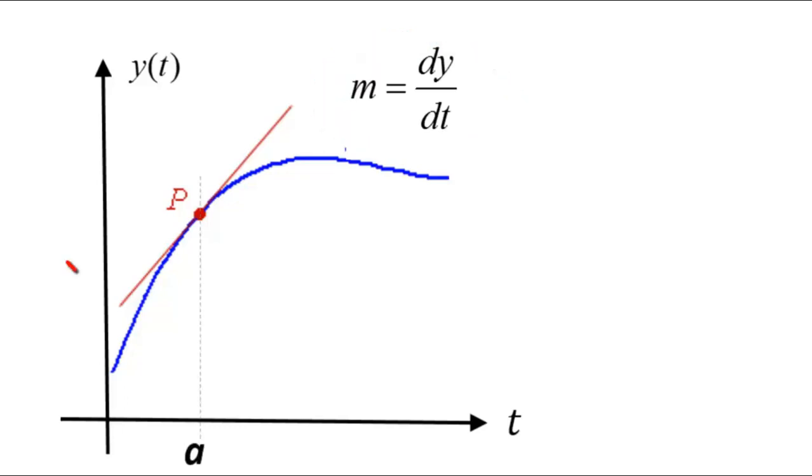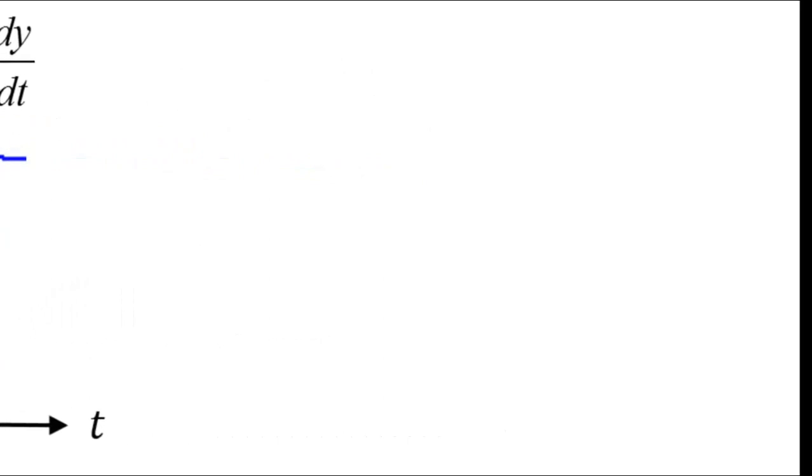In particular, if we want to know what is the slope of the tangent to the curve at t equals a, we evaluate dy/dt like so, t equals a. And that gives us m, the slope of the tangent to the curve y at t equals a. So much for derivative. That is the meaning of derivative.